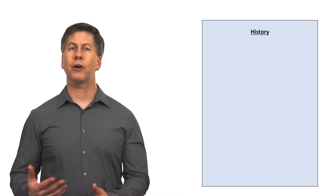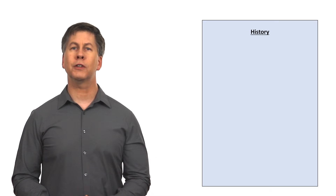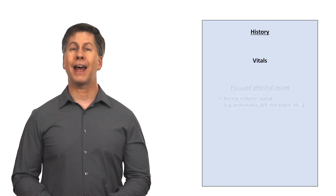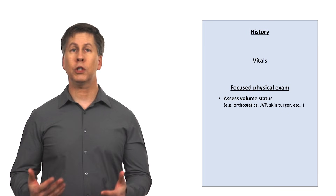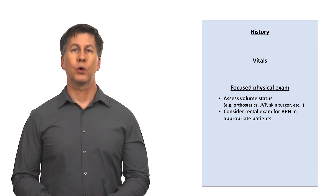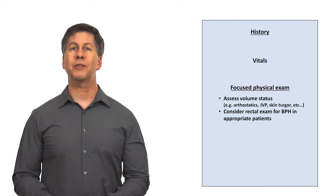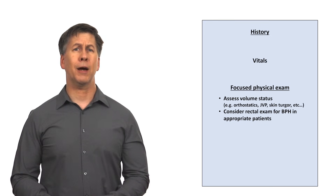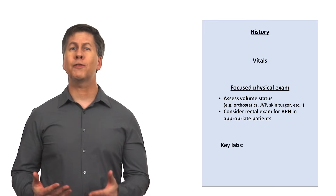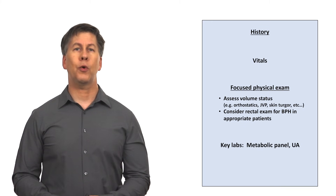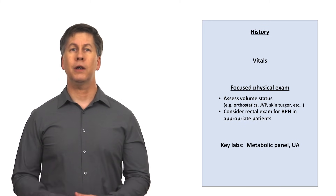In a patient presenting with polyuria, an appropriately focused physical exam can usually be really brief. Consider the vitals and volume status more generally, and if there is concern for BPH, a rectal exam is indicated. For most patients, unless something else came out of the history, that's really it for the indicated exam. Key labs for these patients are a metabolic panel and a urinalysis, preferably with microscopy to aid in a potential diagnosis of a UTI.